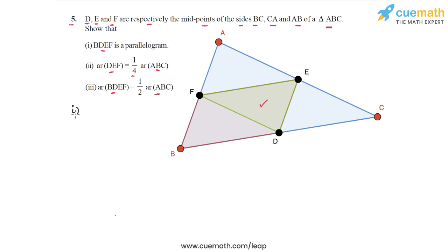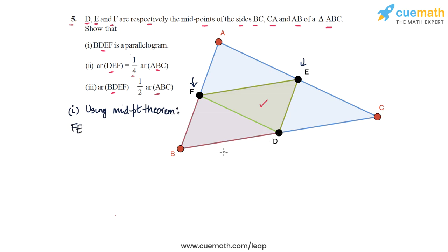Now in the first part, we have to show that BDEF is a parallelogram. We are going to use the midpoint theorem to prove this. F is the midpoint of AB, and E is the midpoint of AC. Using the midpoint theorem, FE will be equal to half of BC. But half of BC is simply BD, because D is the midpoint of BC. So FE is equal to BD, and also FE is parallel to BC, which means FE is also parallel to BD.